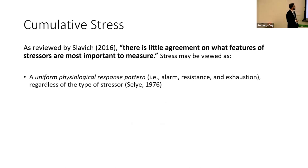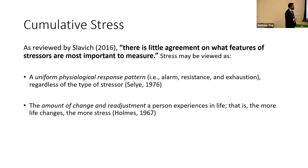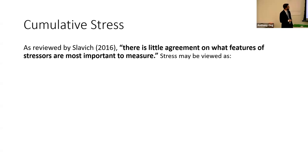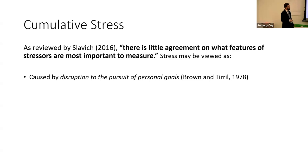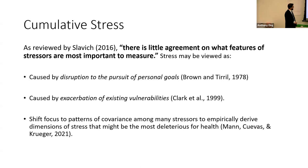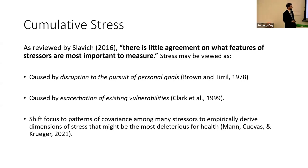Stress may be viewed as a uniform physiological response pattern regardless of the type of stressor, or as the amount of change and readjustment a person experiences in life. It could also be viewed as a function of interpersonal factors like perceived controllability, or as caused by disruption to personal goals, or by exacerbation of existing vulnerabilities. What some colleagues and I recommended in a 2021 paper was to shift focus to patterns of covariation among many different stressors to empirically derive dimensions of stress that may be most deleterious for health.